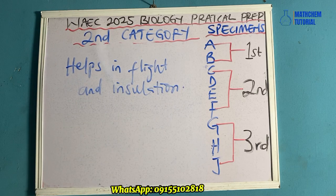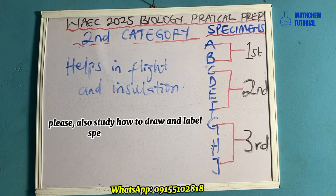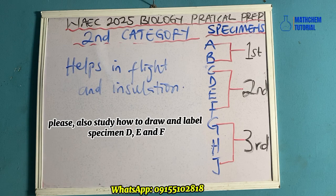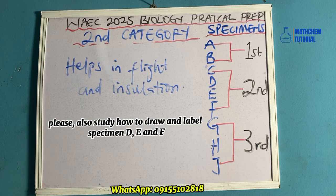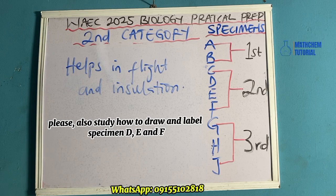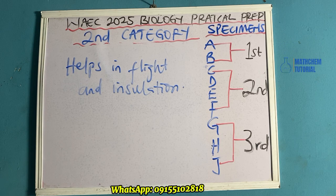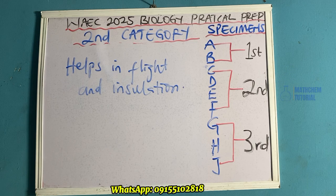Those are the possible questions you can see from your exam for the second category. Now for the third category — specimen G, H, and J — remember there is no I. That will be in the next video. If you need the video for the third category, just comment in the comment section for this 2025 biology practical prep.